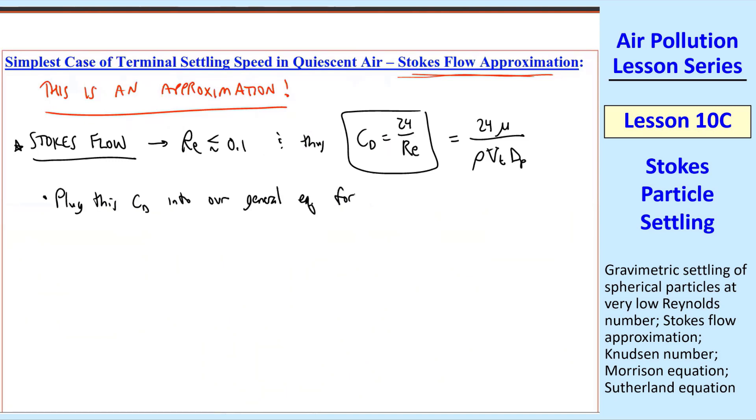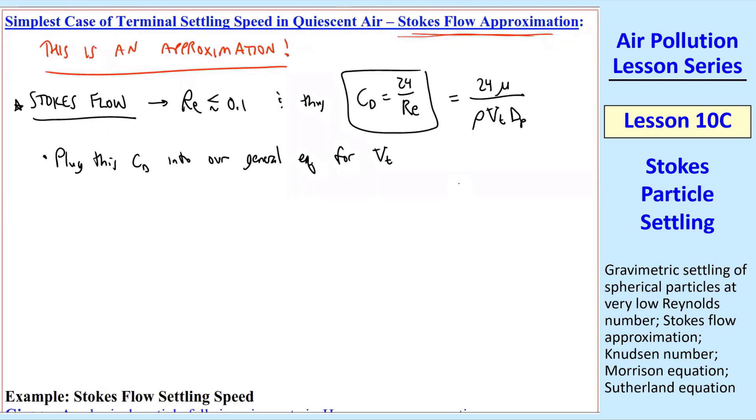Let's plug this cd into our general equation for terminal settling speed vt, and I'll do a little bit of the algebra here. Square both sides, vt squared equal 4 thirds rho p minus rho over rho, g, dp,